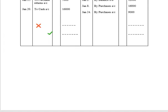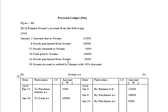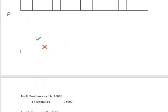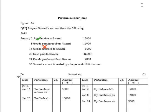The next transaction: January 24th, goods purchased from Swami, 9,000 rupees. The journal entry is: Purchases Account Debit to Swami Account 9,000. As we are preparing Swami Account, we write the name of Purchases. Purchases is recorded on the debit side of the journal entry, so at the time of posting into the ledger it will be posted on the credit side as: January 24th, By Purchases Account, 9,000 rupees.